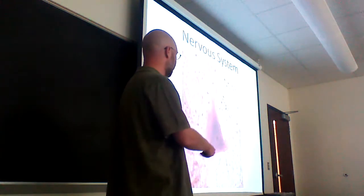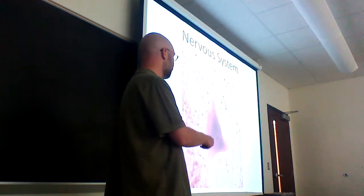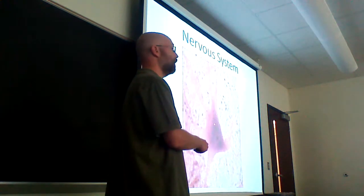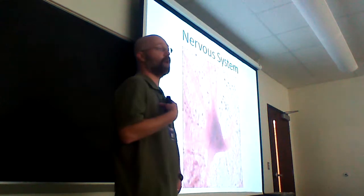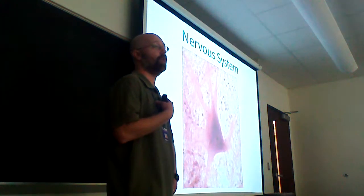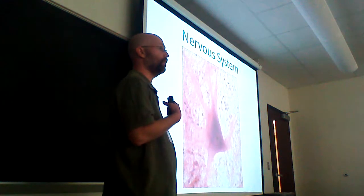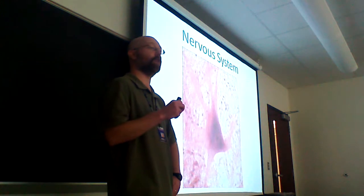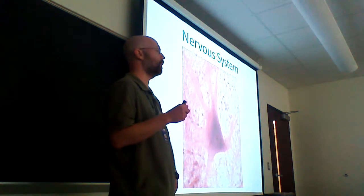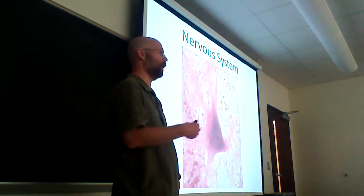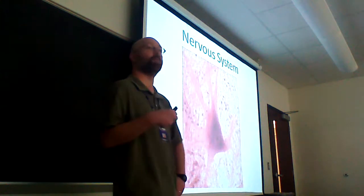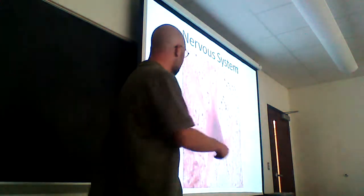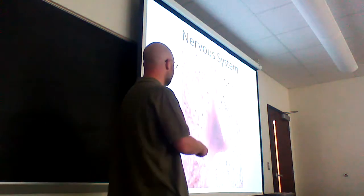What kind of a cell is that? That's a neuron. Don't tell me nerve cell — nerve cell is not specific. Certainly don't tell me nerve, because a nerve doesn't mean a cell at all; it's a collection of cell parts, and we'll talk about that later. This is a neuron.